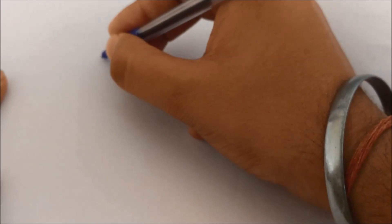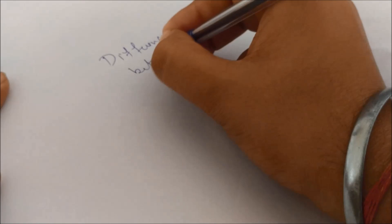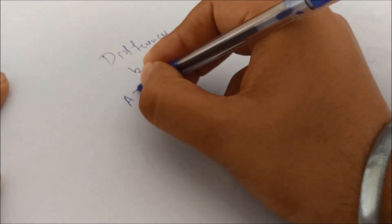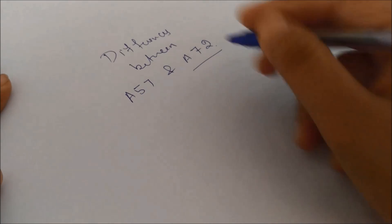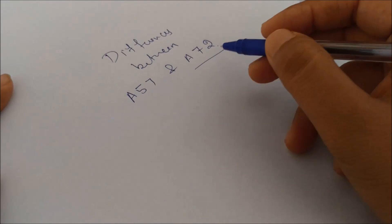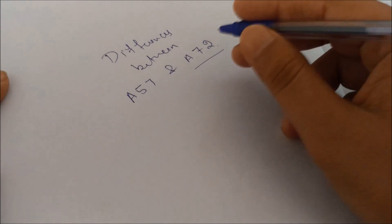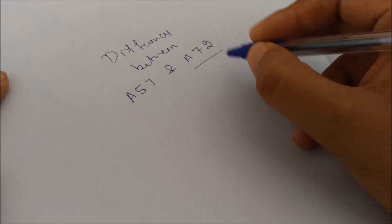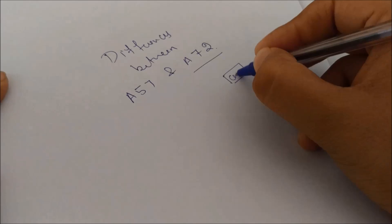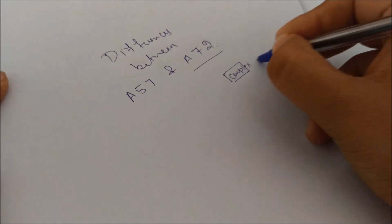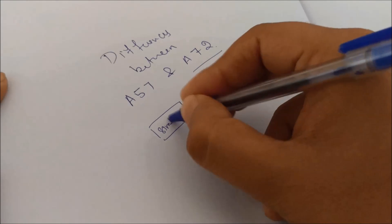Now let's see the differences between A57 and A72. So as the numbers suggest, 72 will be having higher power as compared to 57. So the simple thing is that A72 will have more complex design as compared to A57 simple design.